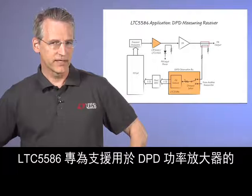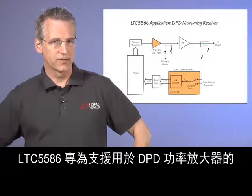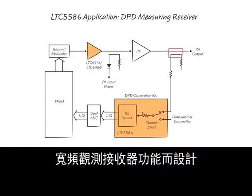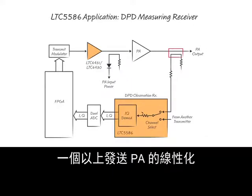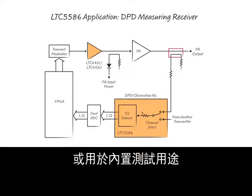The LTC5586 is designed to support the wideband observation receiver function for a DPD power amplifier. The input RF switch can be used for linearization of more than one transmit PA, as we see here, or for built-in test purposes.